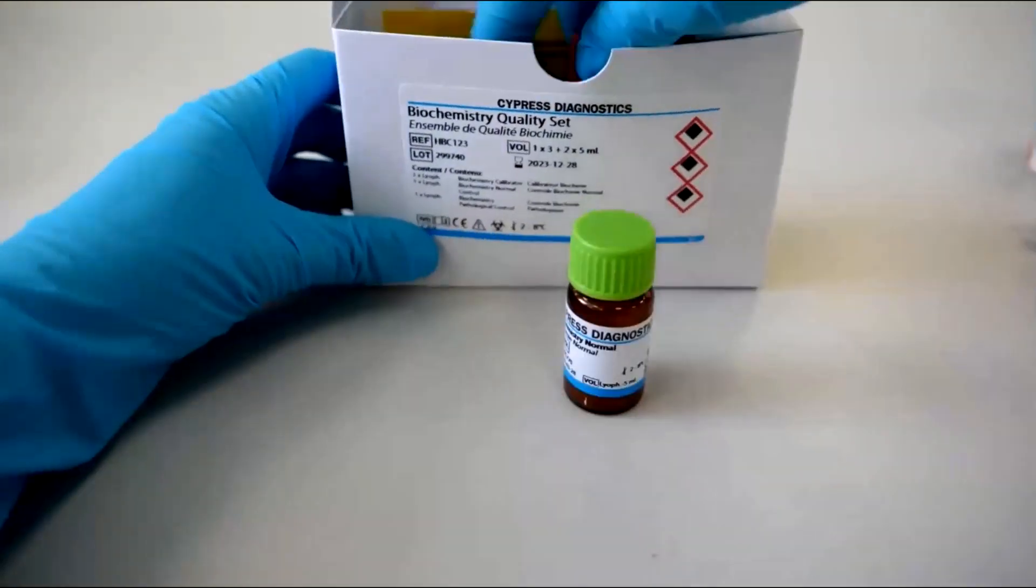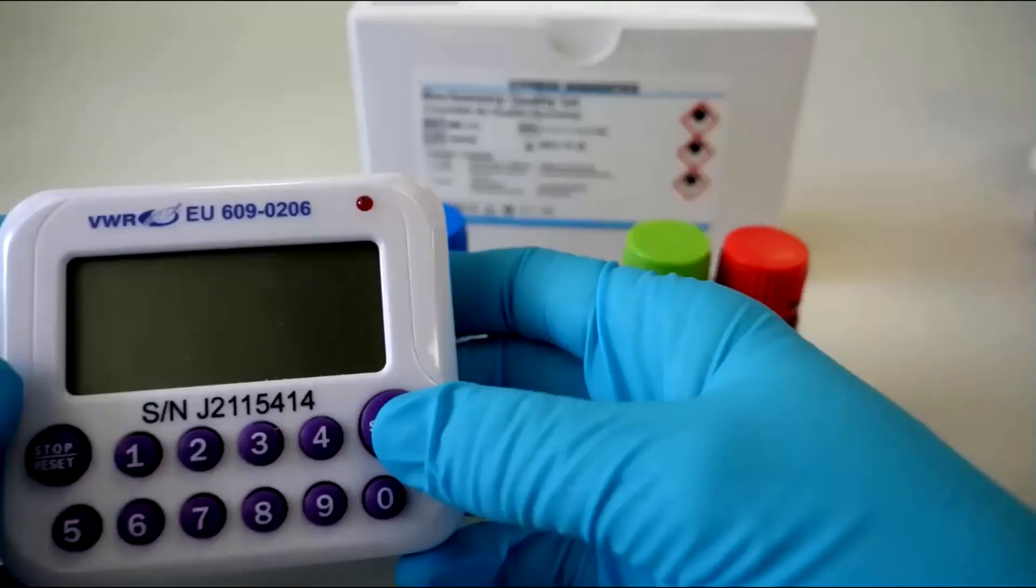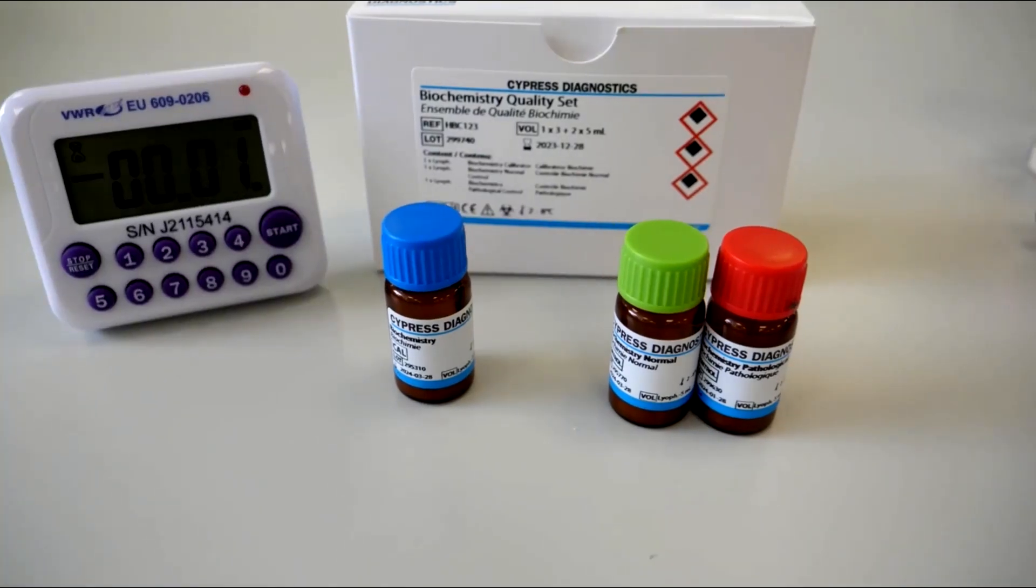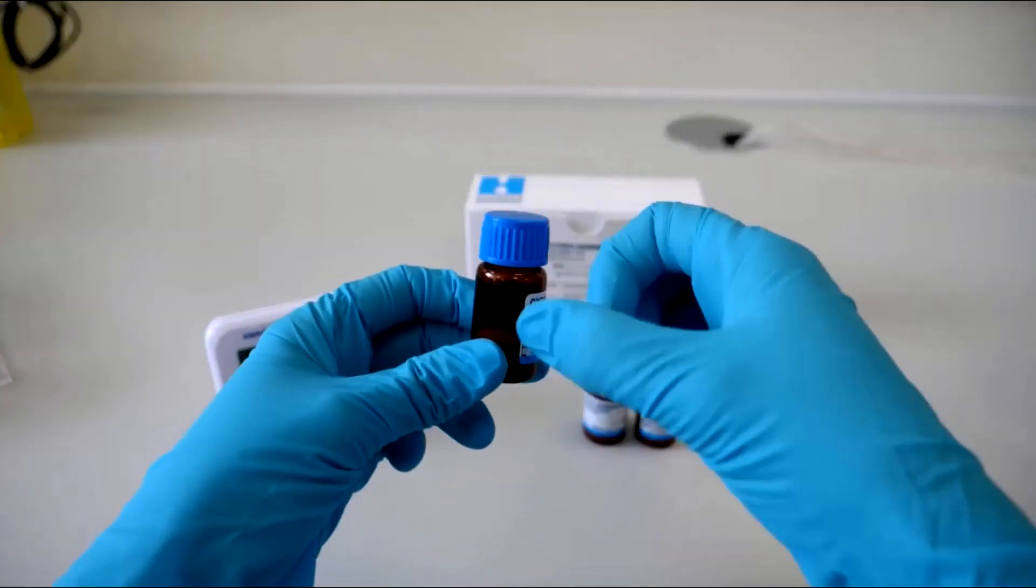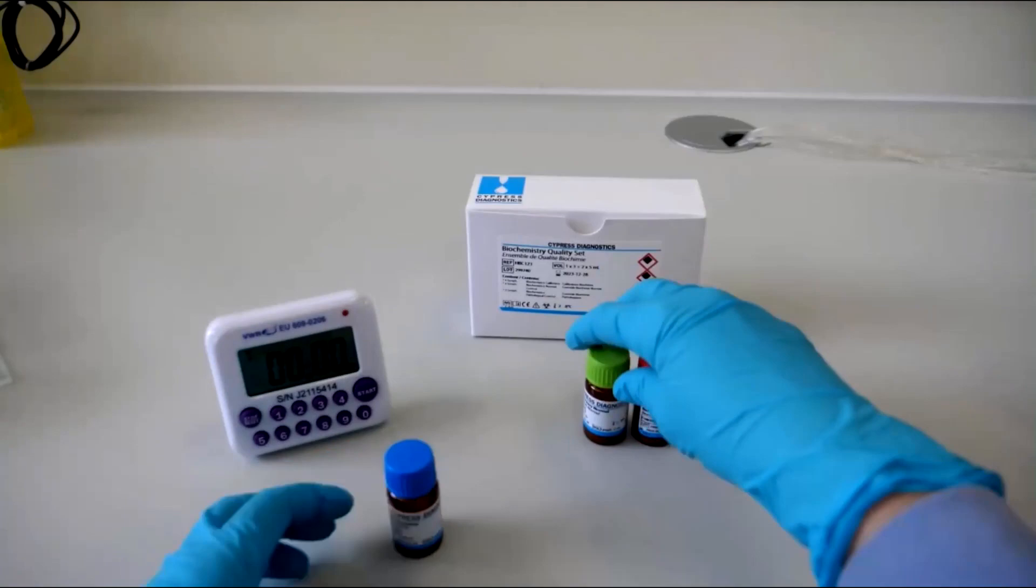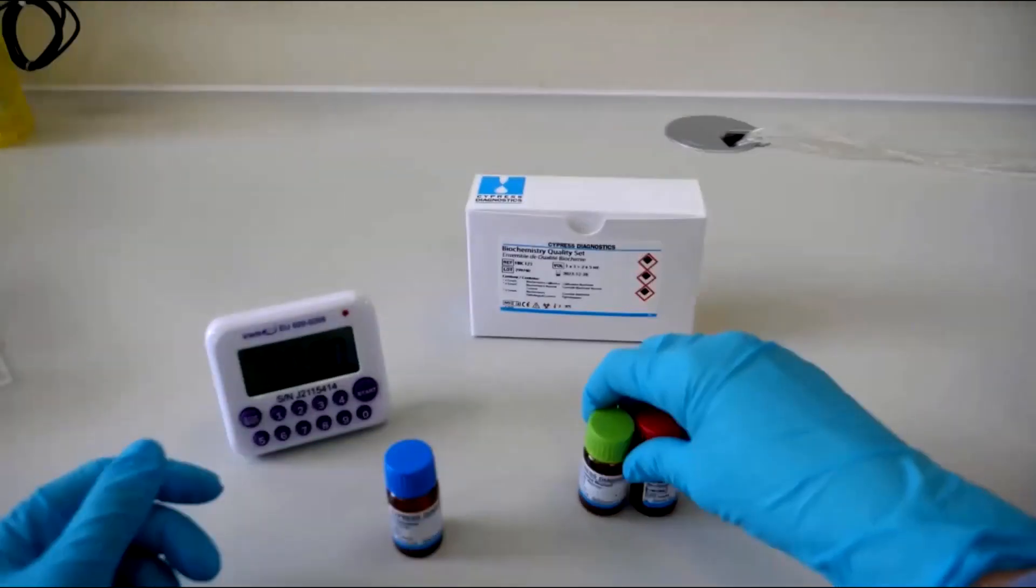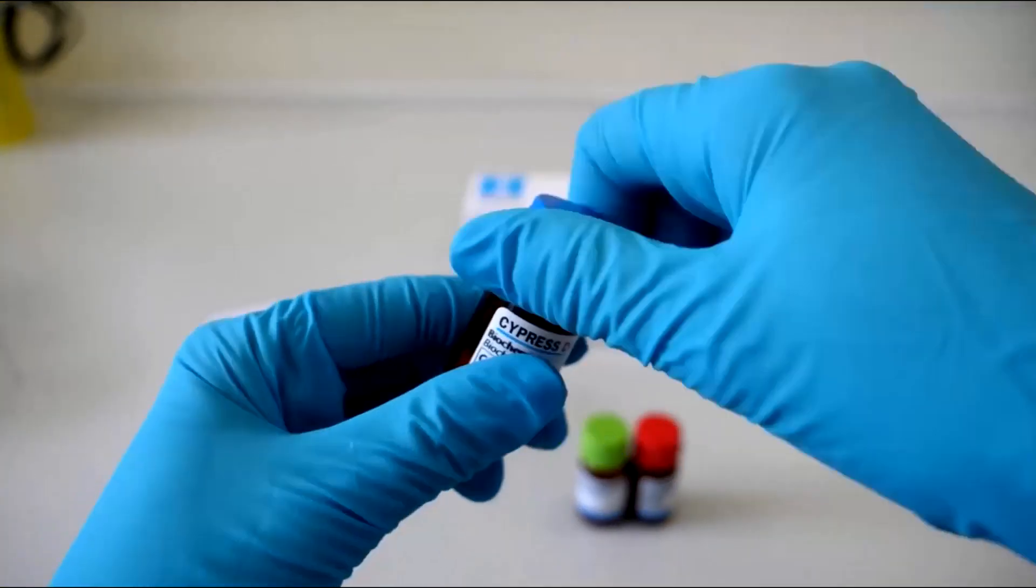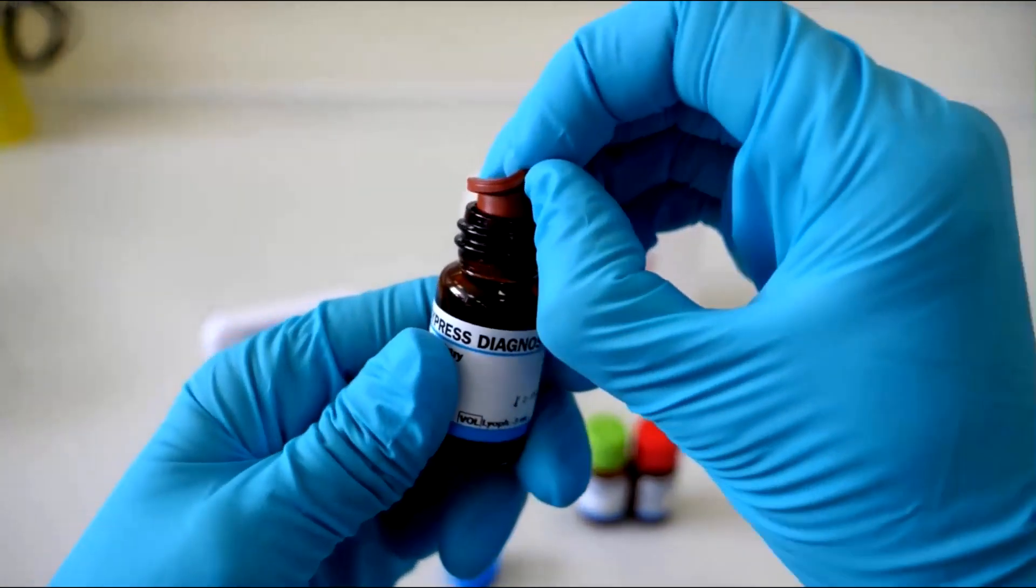Prepare the calibrator and quality controls as follows. Bring the vials to room temperature for 30 minutes. Gently tap the vial to make any material fall from the rubber cap. Open the vial carefully. Make sure not to spill any lyophilized material remaining on the cap.